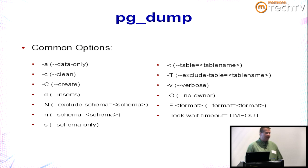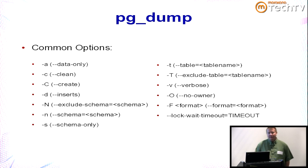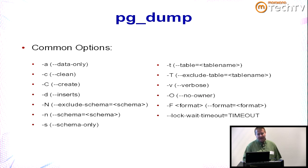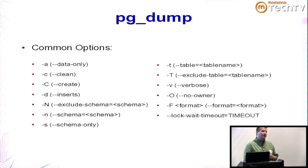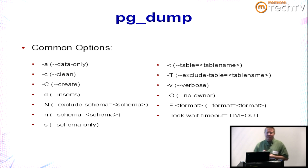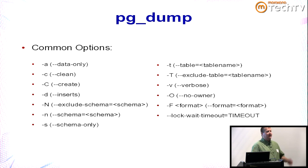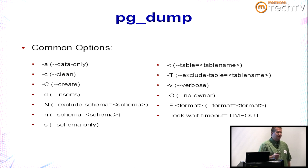The --schema-only flag dumps only DDL — CREATE TABLE statements, CREATE INDEX, and so forth — without data. You can specify individual tables with -t table_name, or use wildcards like -t 'prefix*', or pass a comma-separated list. You can exclude tables the same way. The --verbose flag gives debugging info. The format option is important: the default is a plain flat SQL file restored with psql, but you can specify custom format (-Fc) or tar format (-Ft). Both custom and tar are compressed.